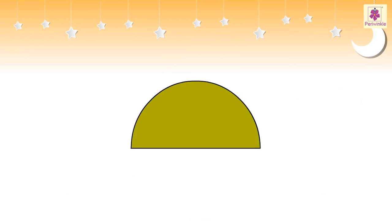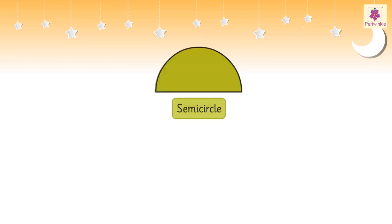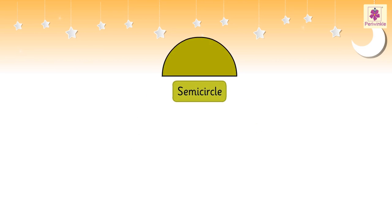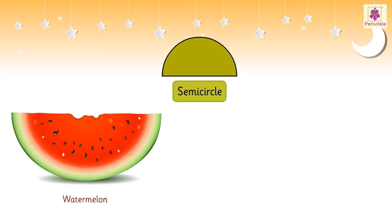Half of a circle is called a semicircle. Examples of a semicircle are a piece of watermelon and a hand pan.